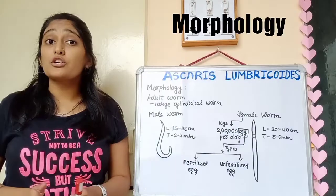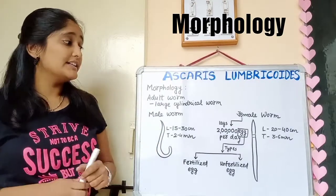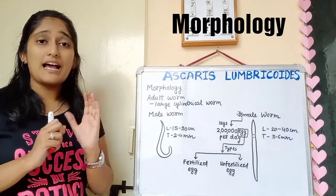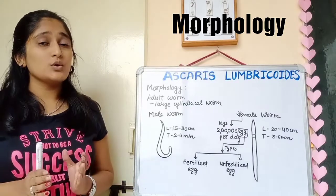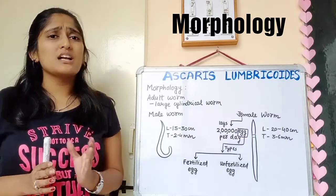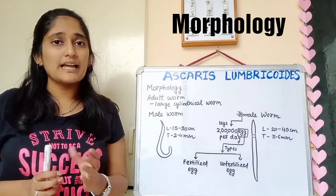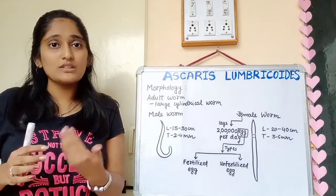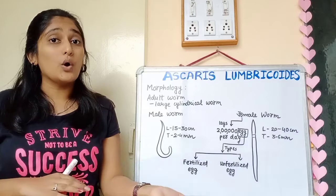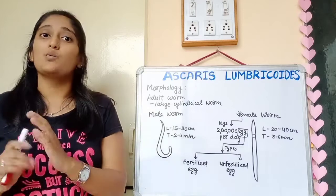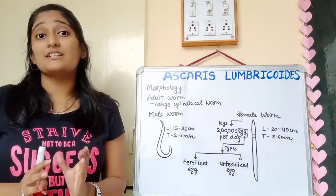Morphology of Ascaris lumbricoides: the adult worm is a large cylindrical worm. When inside the body its color is pale pink, but when fresh or outside the body its color is white — so when we look at specimens, we see white worms.